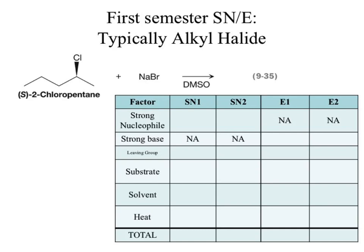So, big summary for first semester. What we're moving into is Chapter 10, substitution and elimination. One of the things we have to keep in mind is what mechanisms we're running through: SN1, SN2, E1, and E2, and what conditions facilitated each of those.